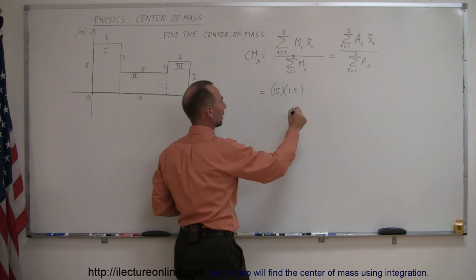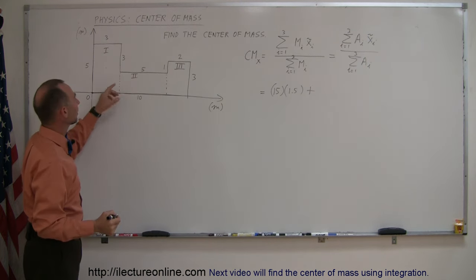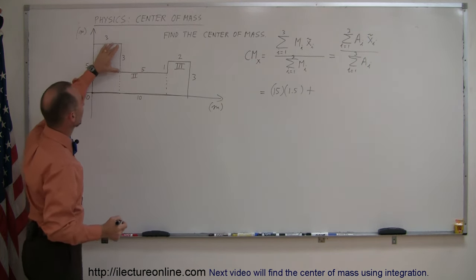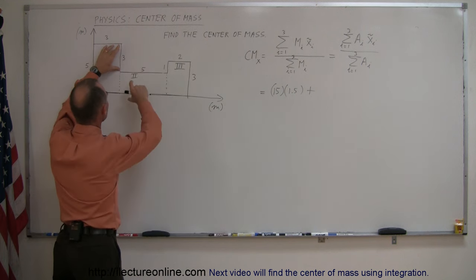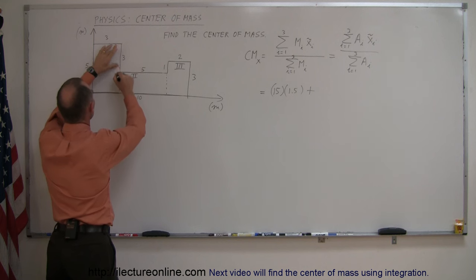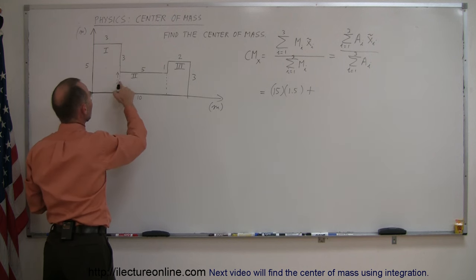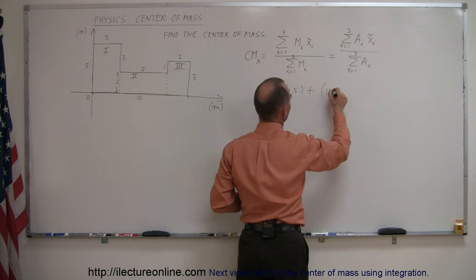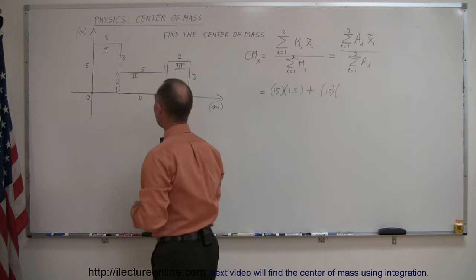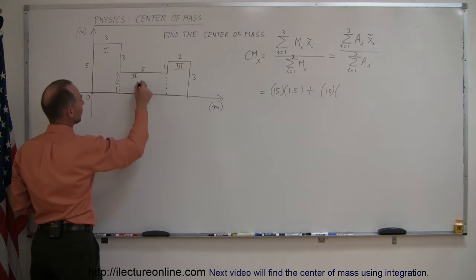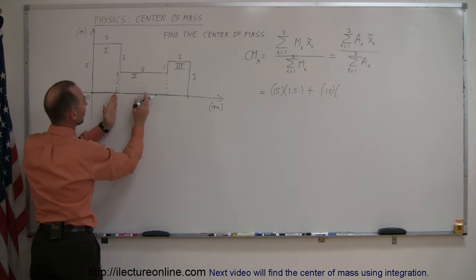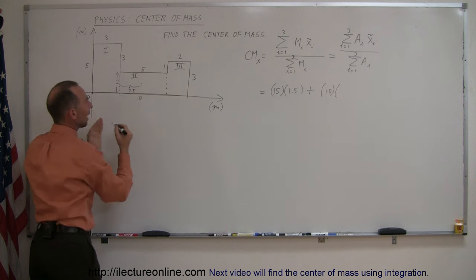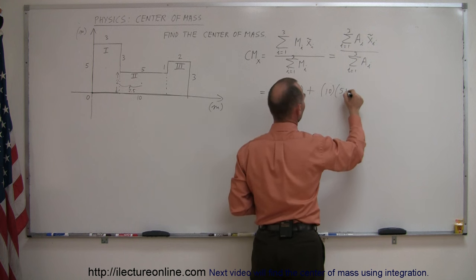Plus, for the second piece: the area — if this dimension is 3 and this is 1, then this must be 2 meters long, so 2 times 5 is 10. Times the center of mass in the x-direction of that piece: this piece is 5 wide, so from there to there would be 2.5 units, and 3 plus 2.5 is 5.5 meters to the right. So we have 10 times 5.5.